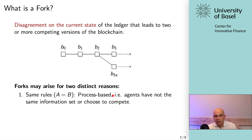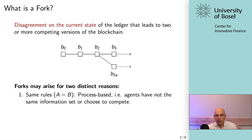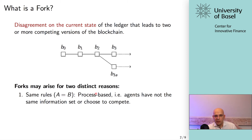The most common case of these process-based forks is simply because two blocks are created at approximately the same time, ending up in a so-called block race. That's the same-rule, process-based example.